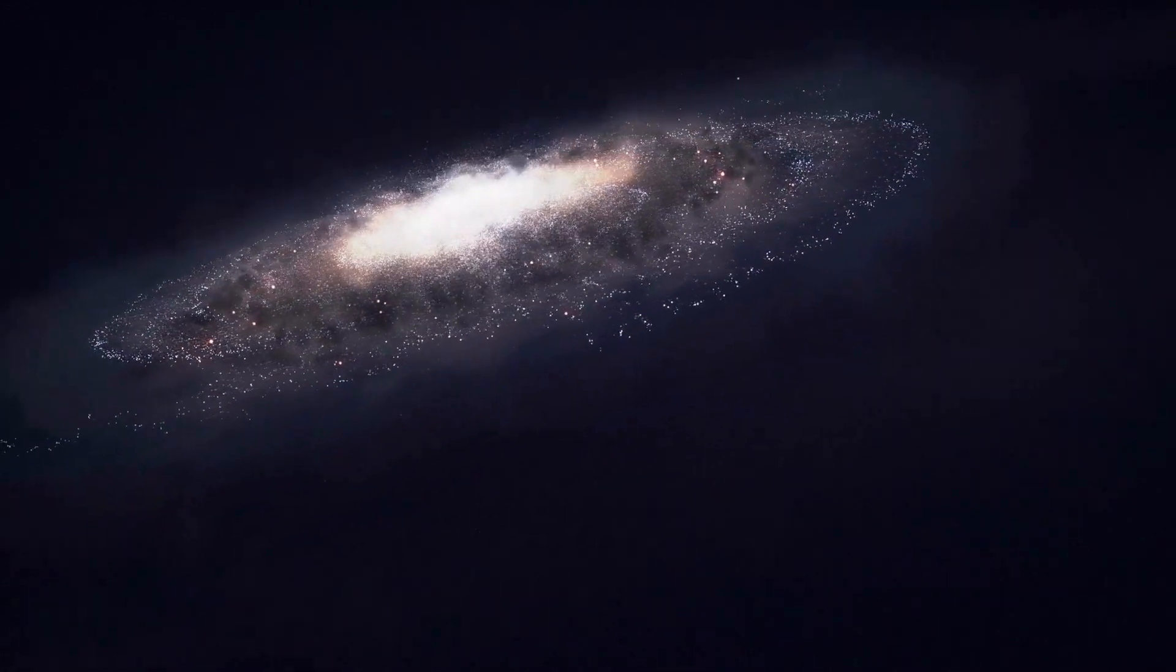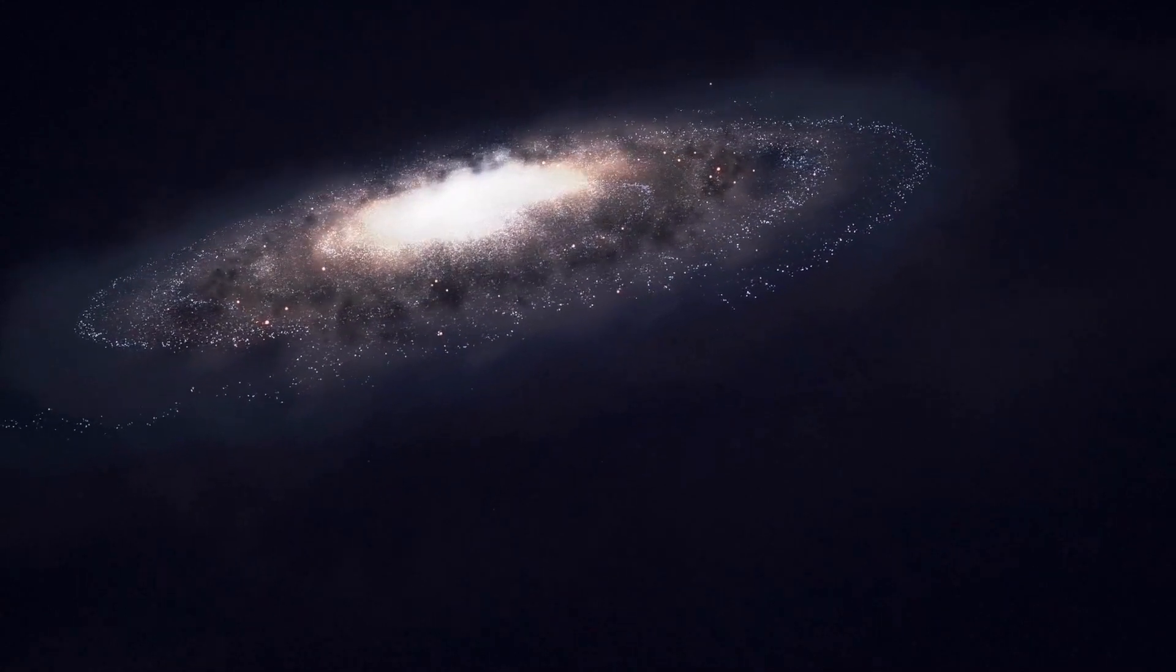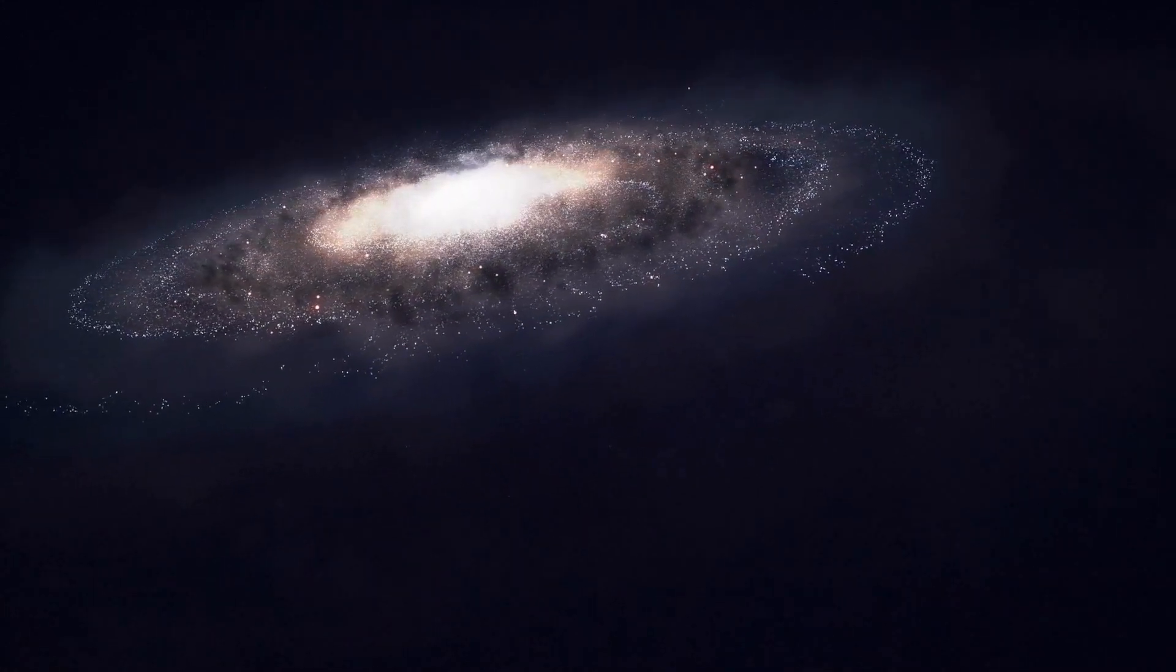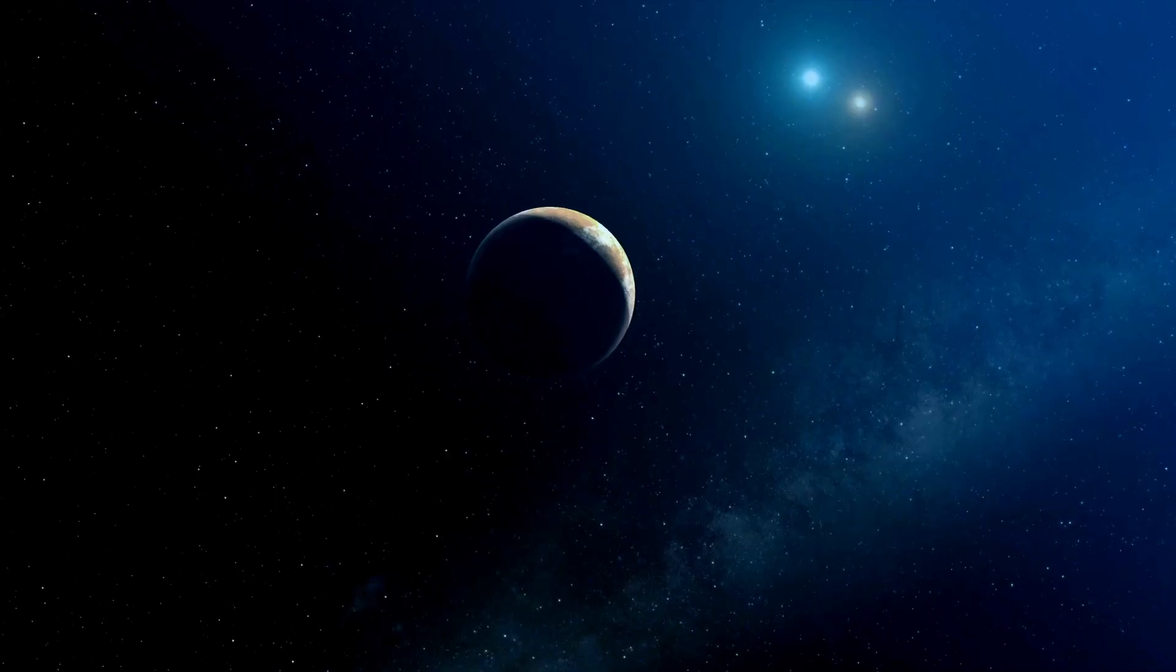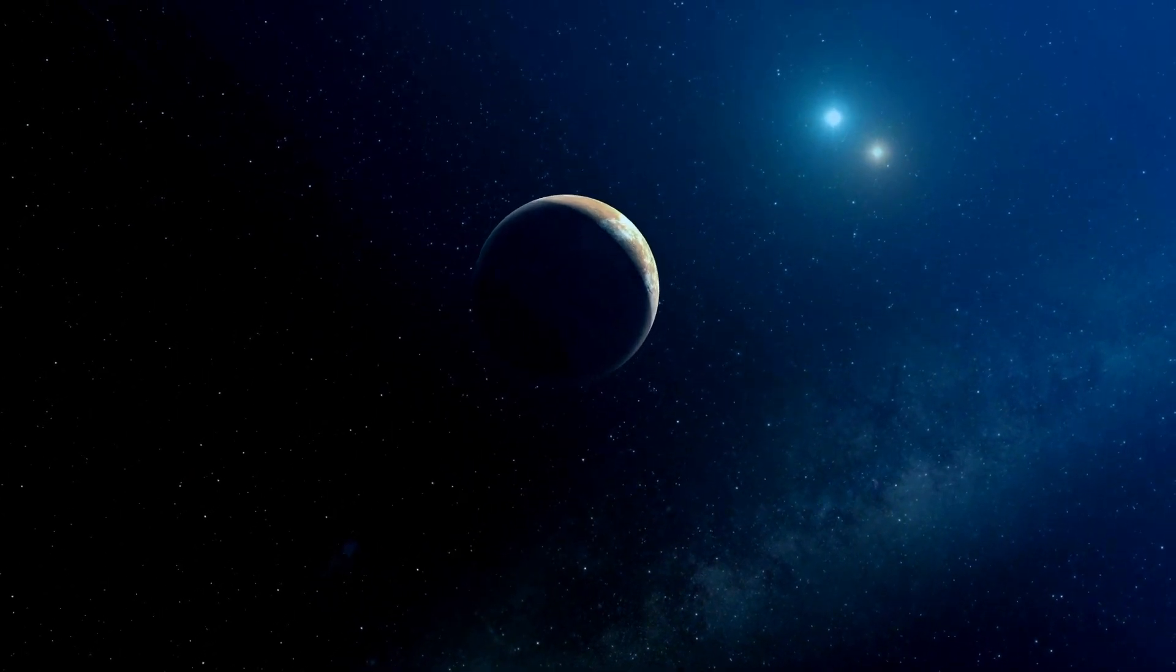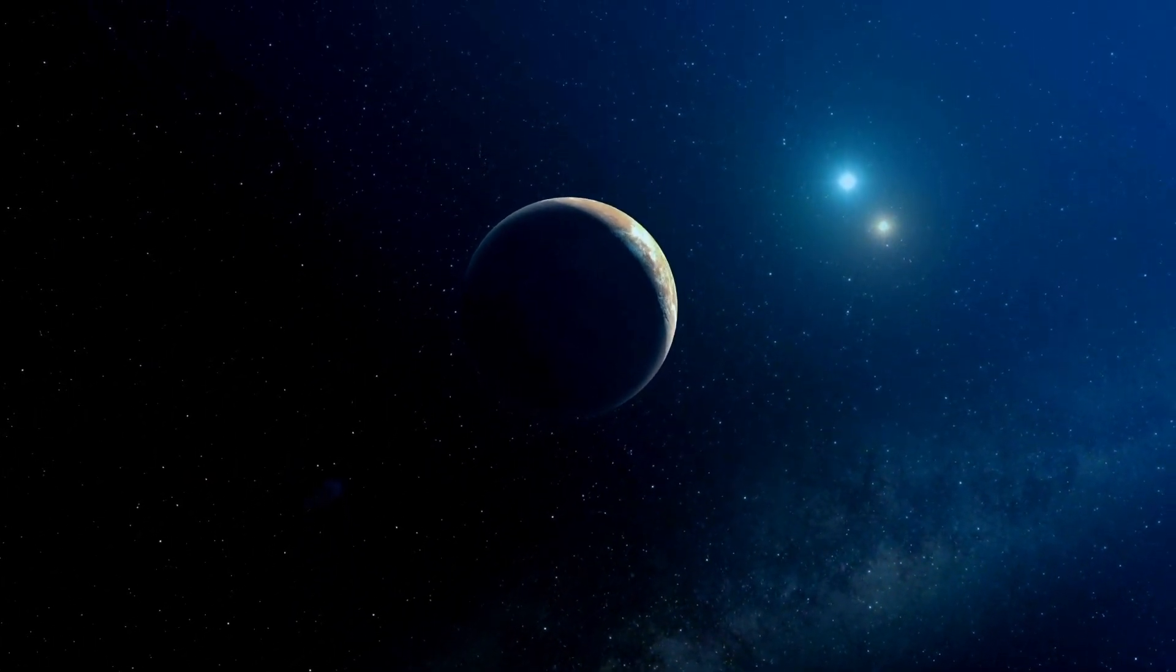Yes, you heard that right. Not one, not a hundred, but a staggering 3,916 stars around which planets orbit. Each one of these systems could potentially harbor unique planets, moons, asteroids, and maybe even life.